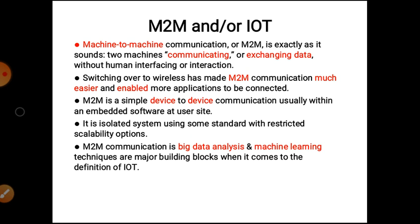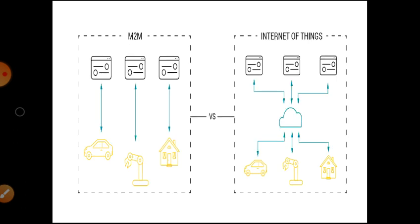Switching over to wireless has made M2M communication much easier and enabled more applications to be connected. M2M is a simple device-to-device communication, usually within embedded software at the user site. It is an isolated system using some standards with restricted scalability options. M2M communication using big data analysis and machine learning techniques are major building blocks when it comes to the definition of IoT.